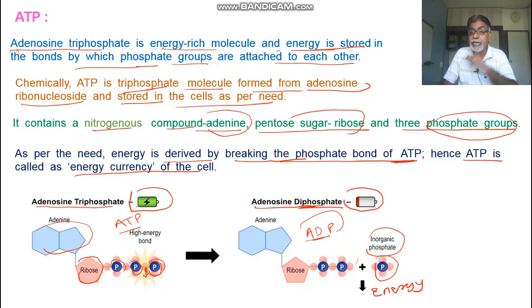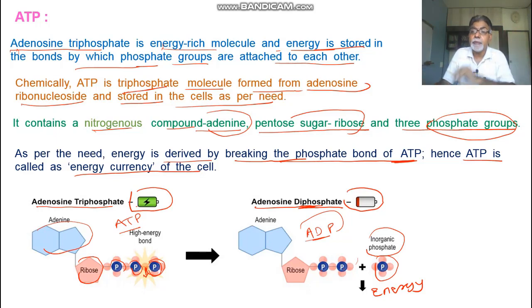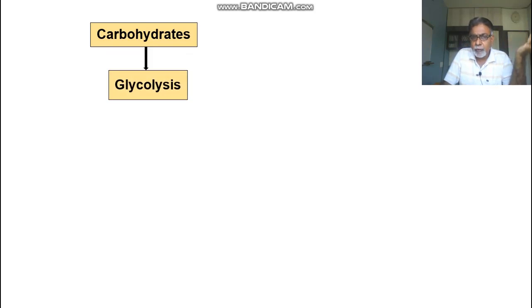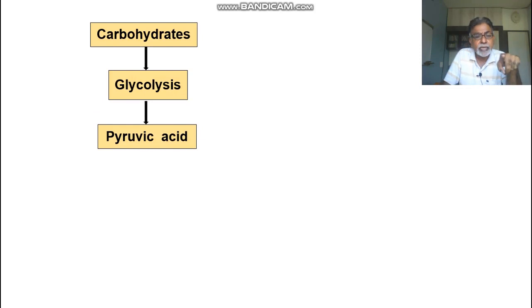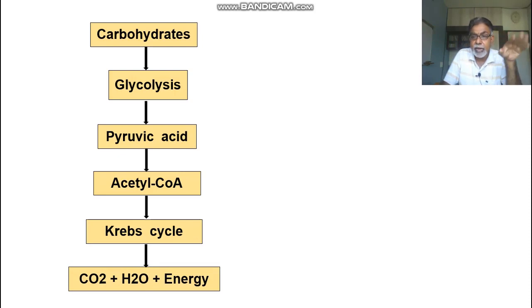When one phosphate group is removed from ATP, two phosphate molecules remain and it becomes ADP — adenosine diphosphate — and energy is released. This ADP can be converted back to ATP by attaching a phosphate ion during chemical reactions. When there are plenty of carbohydrates, glucose undergoes glycolysis to form pyruvic acid, then pyruvic acid converts to acetyl CoA, and then via the Krebs cycle produces CO2, H2O, and energy.